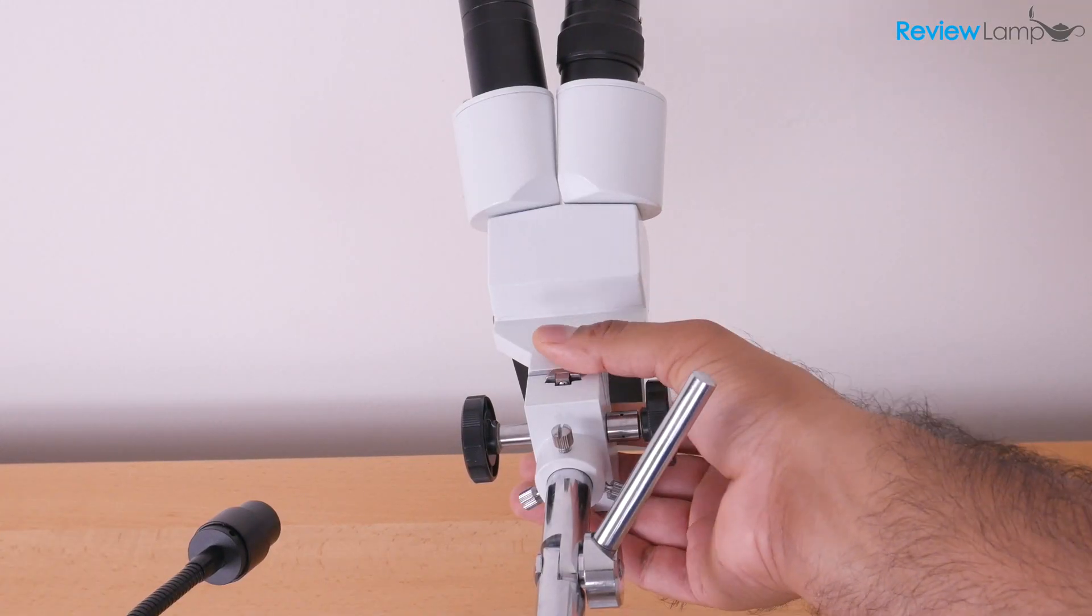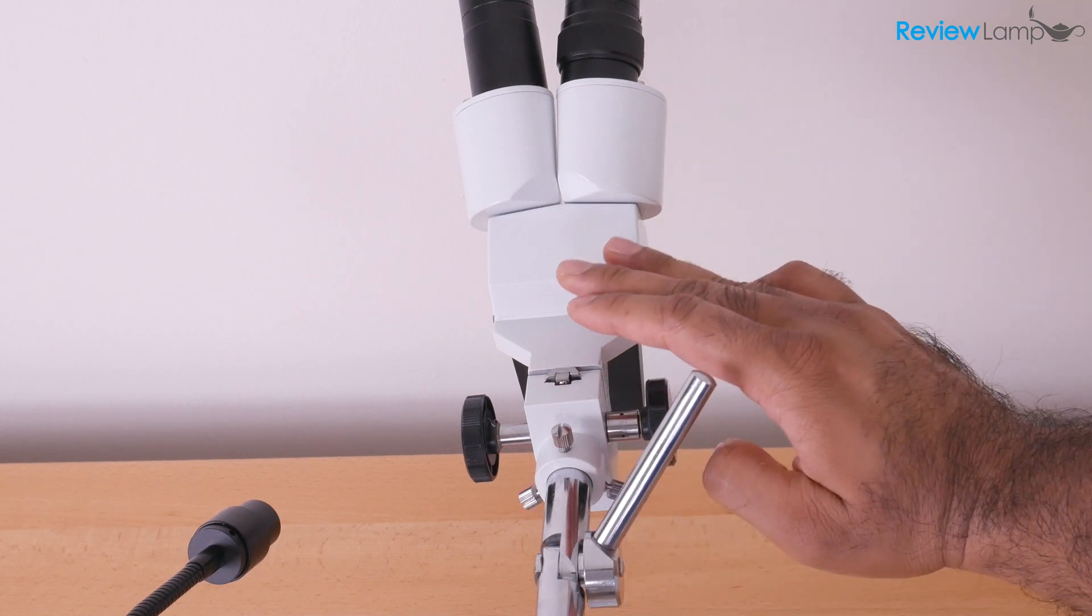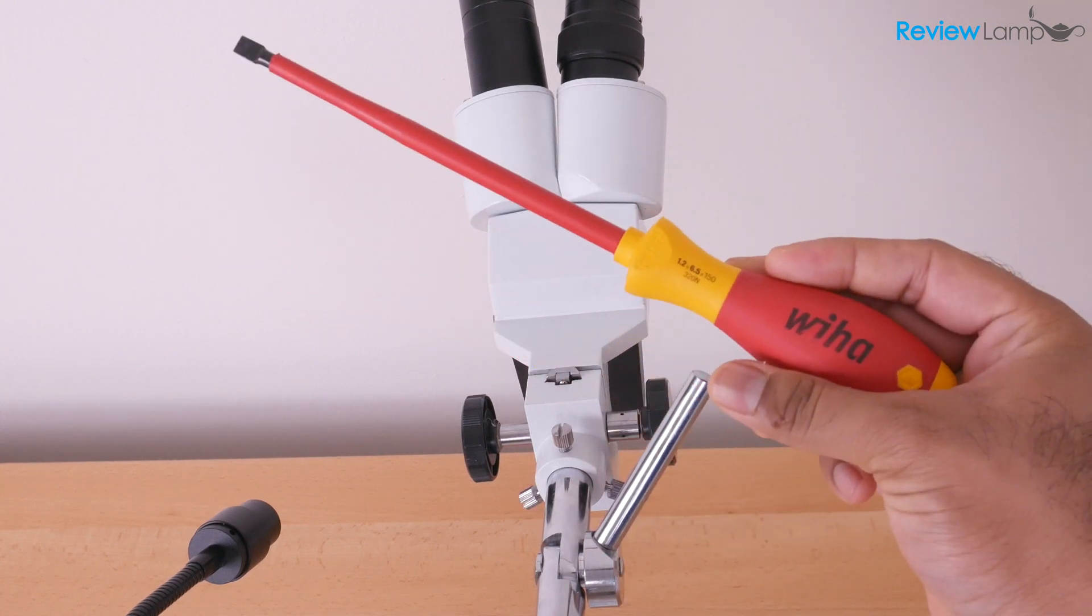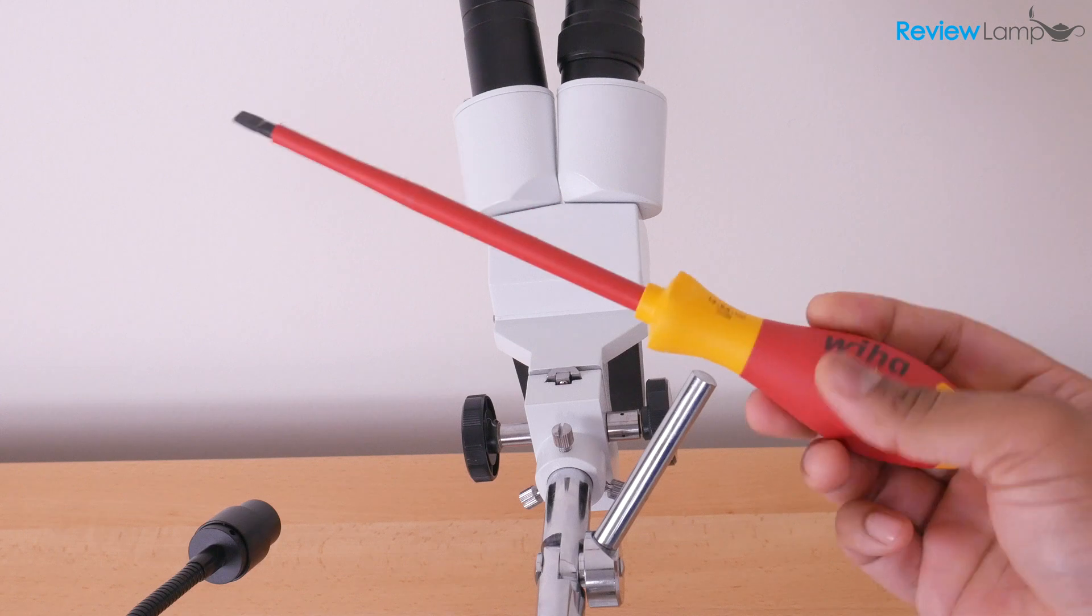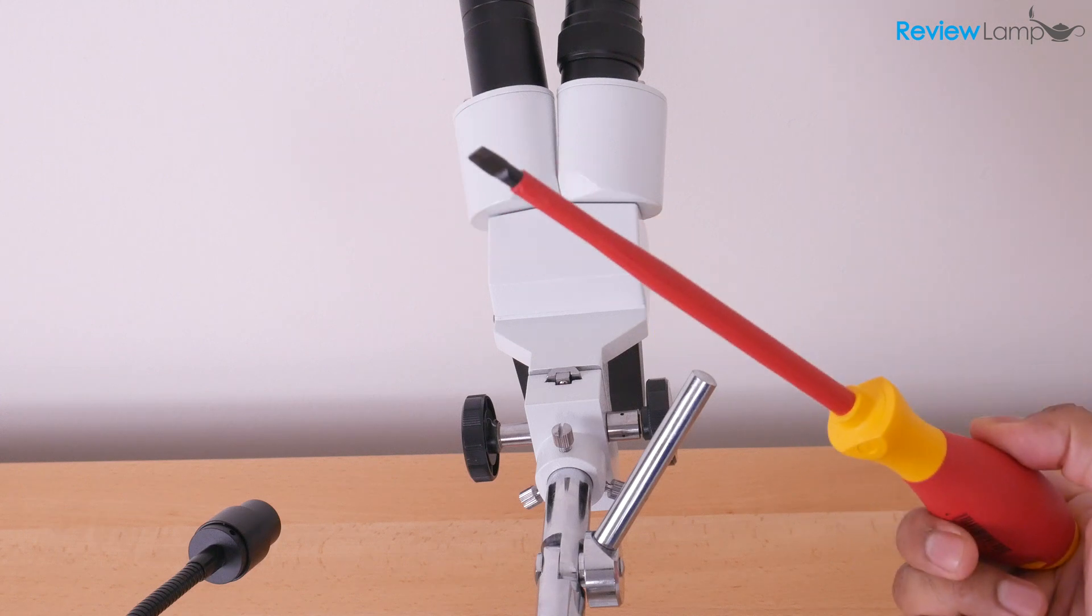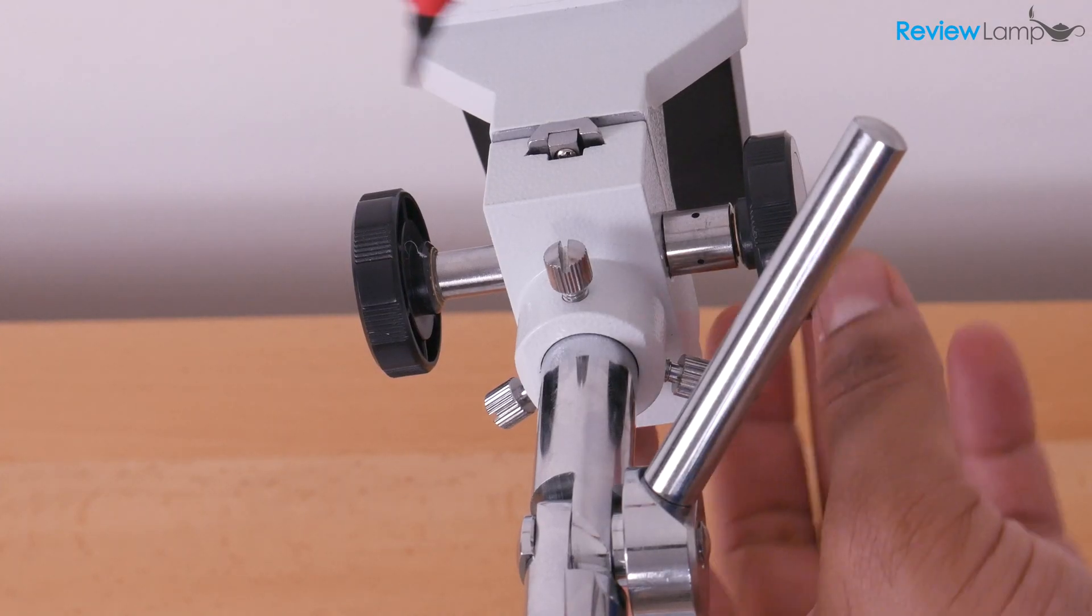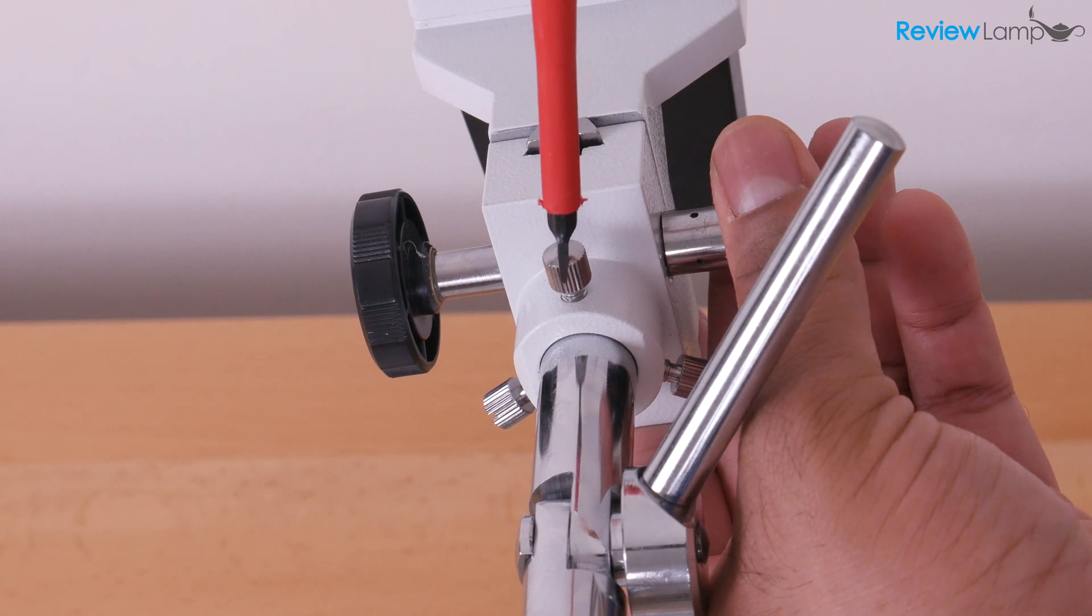And for the next step, we're going to adjust the tilt angle of the microscope head. And to do this, you're going to need a screwdriver. This is a medium sized flat screwdriver. And to do this, all you need to do is adjust the screw on top.